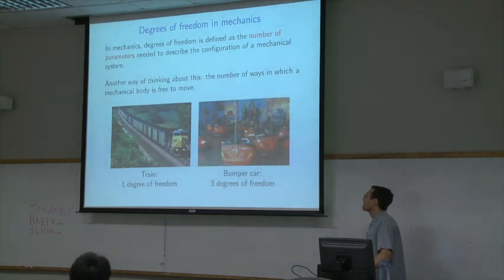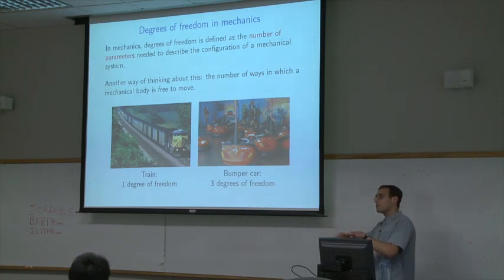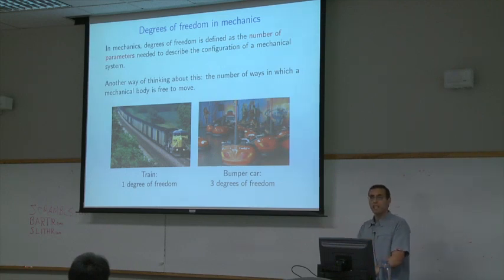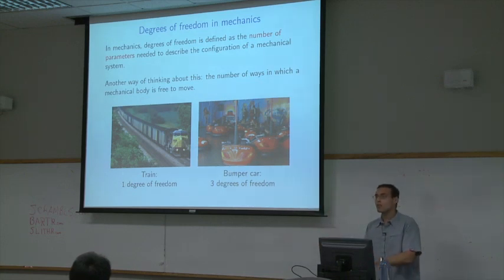A bumper car actually has three degrees of freedom. It can move anywhere in the 2D plane — the floor — it can't move up or down. It can also spin around the axis defined by the pole. Once I know its x, y position and its angle, that tells me where the car is.